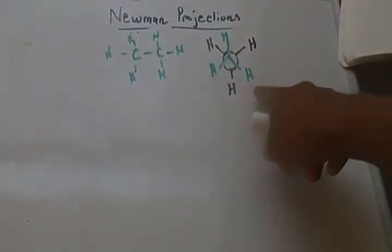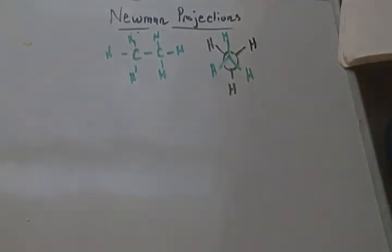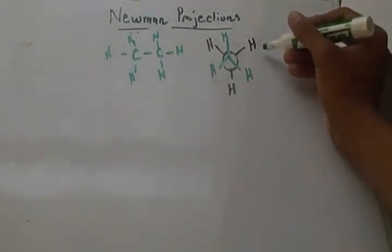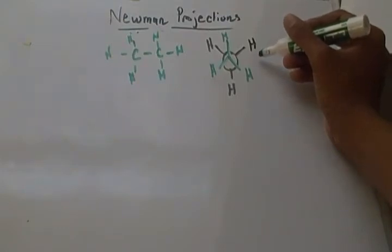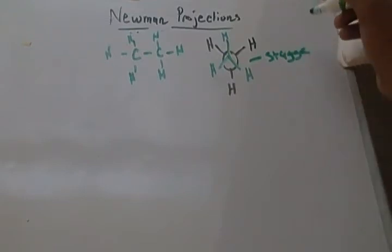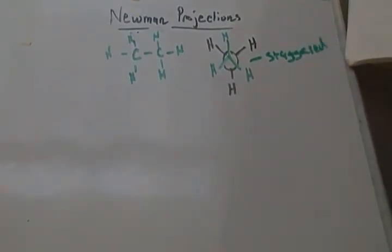This position, where you can see all of these, is known as a staggered state. The six bonds, the six carbon to hydrogen bonds, are as far away from each other as possible. And that leads to a really stable conformer. This is known as being staggered, and you usually want your conformer to be in a staggered state.